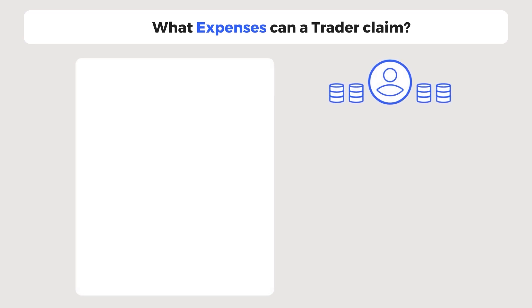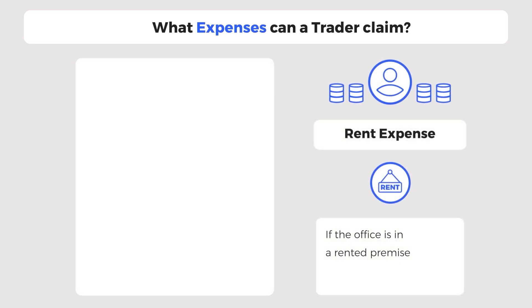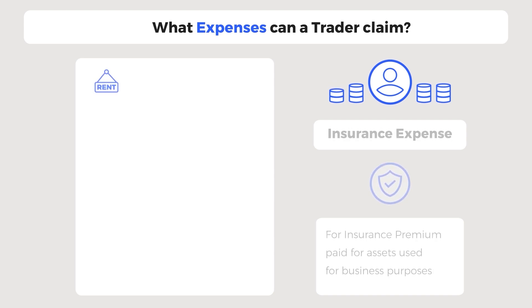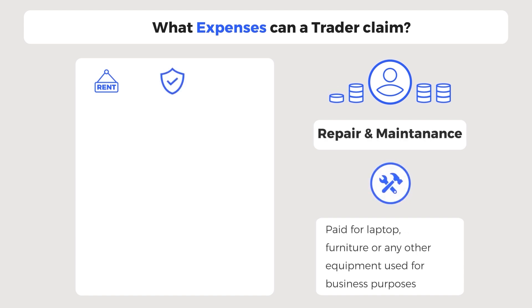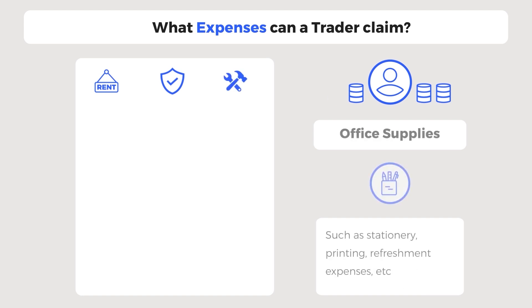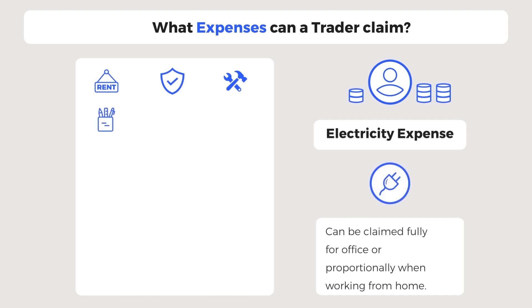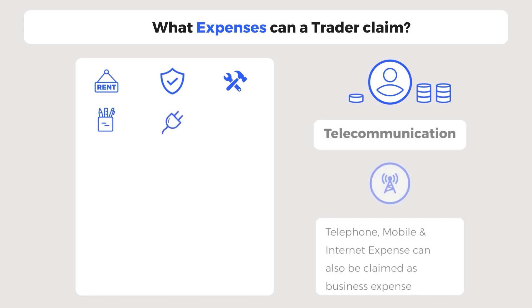A trader can claim all expenses directly related to trading activity, such as rent expense if the office is in a rented premise; insurance expense for premium paid on assets used for business purposes such as computer systems; repairs and maintenance paid for laptop, furniture, or any other equipment used for business; office supplies such as stationery, printing, and refreshment expenses; electricity expense paid for the office. If you are working from home, you can claim the electricity expense proportionately. Telephone, mobile, and internet expenses can also be claimed as business expenses.